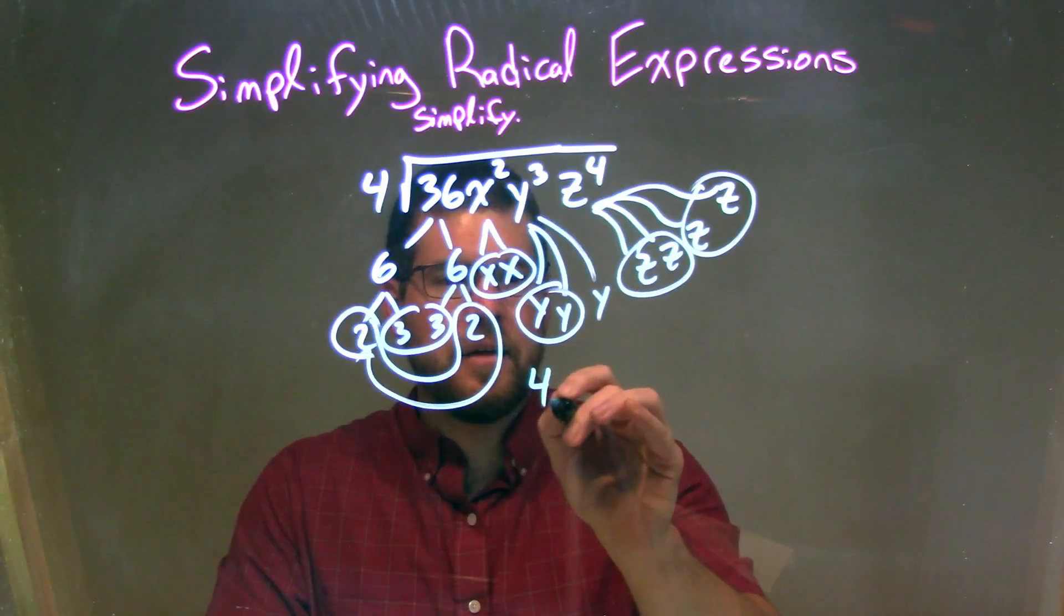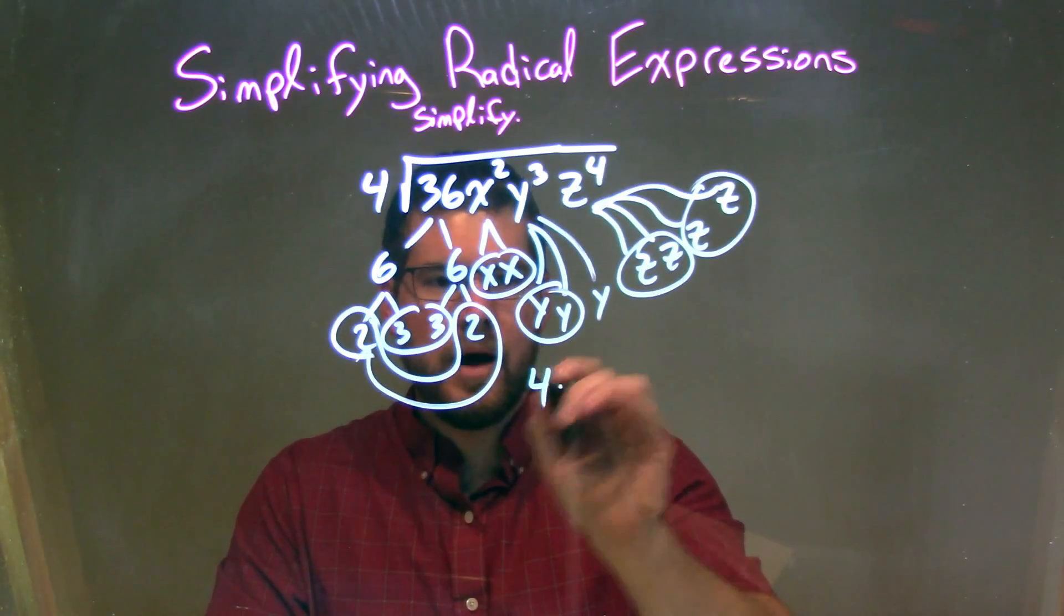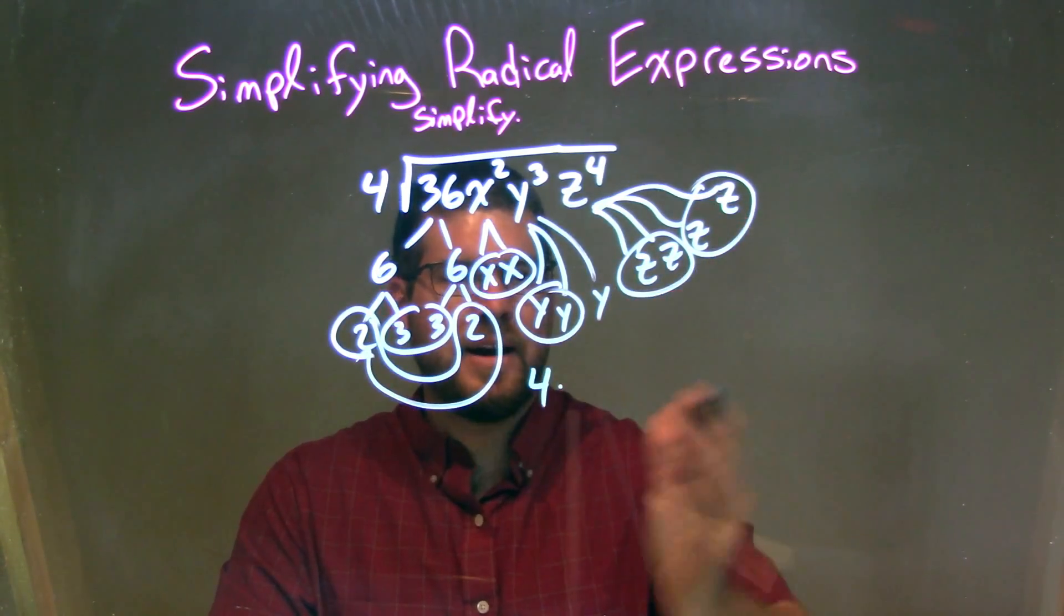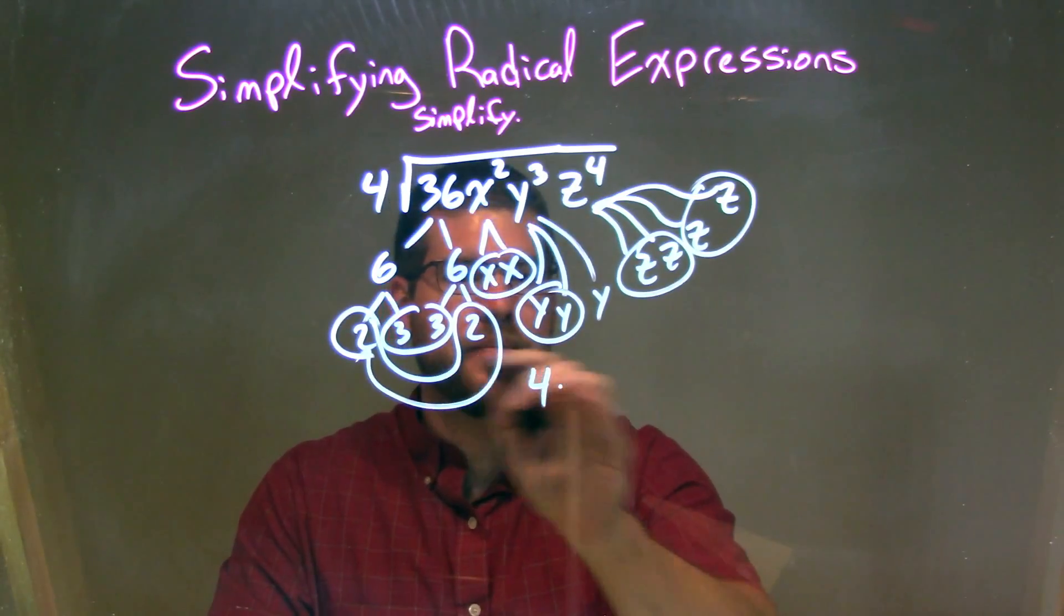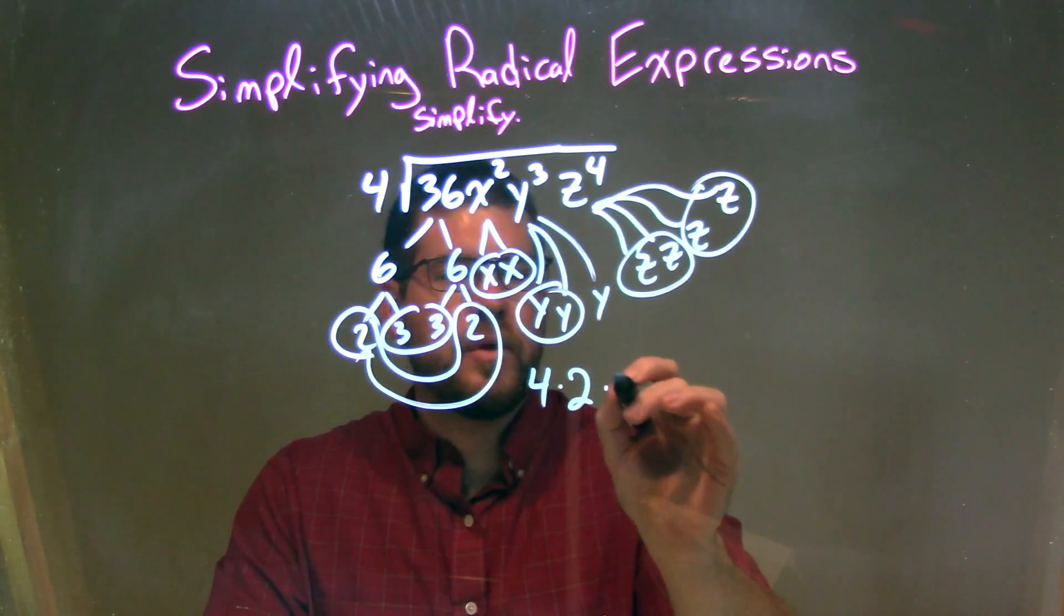So now I rewrite this. Four stays on the outside, and then I'm going to multiply that by each pair represented as a single outside the square root. So we have a 2, and then a 3.